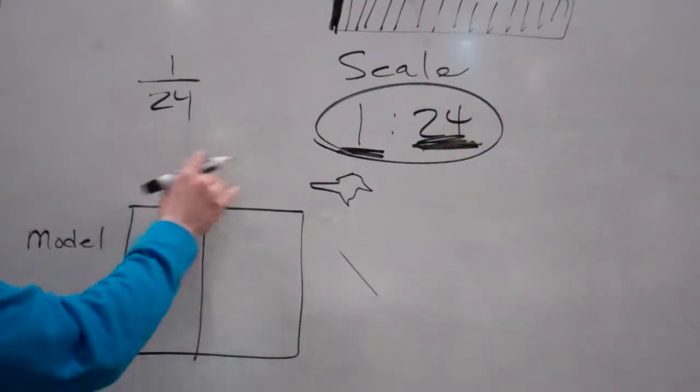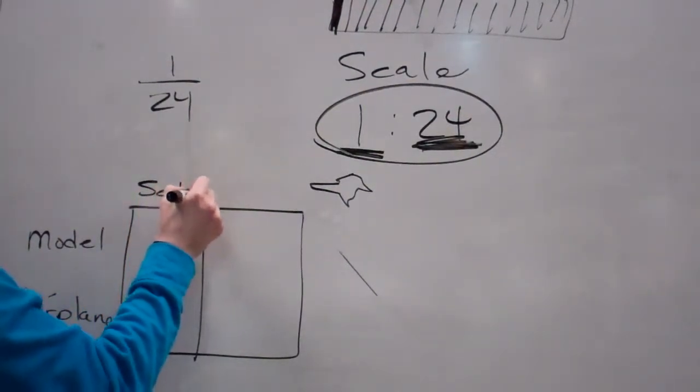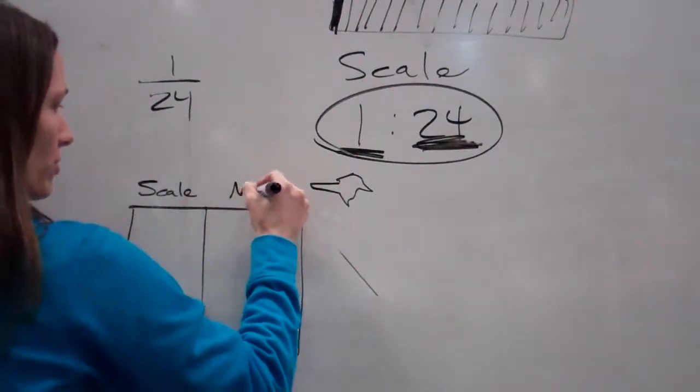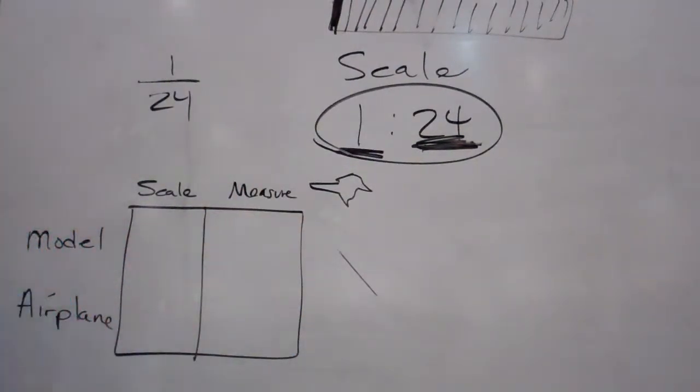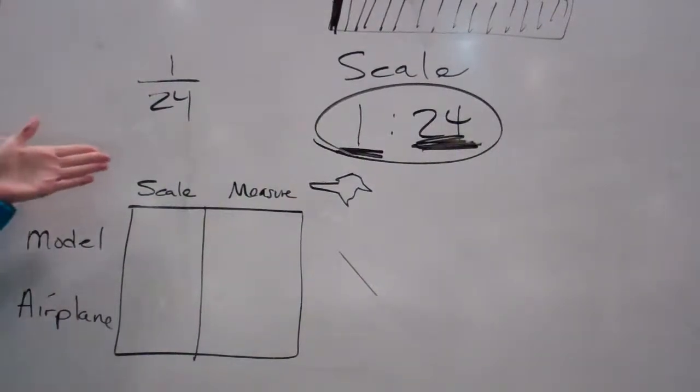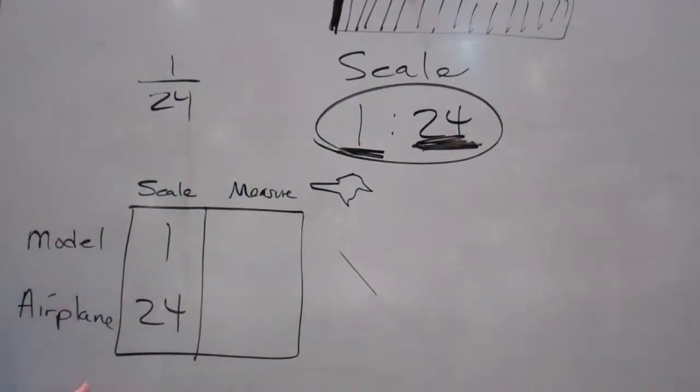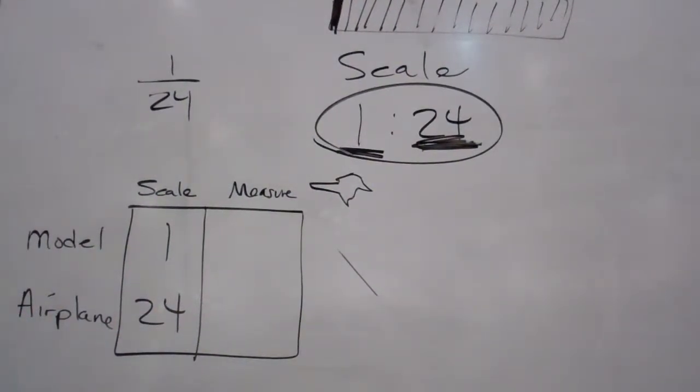And then, what are we trying to figure out? Well, instead of doing percent and actual count, it's scale and then the actual measure. So, I'm just going to put measure. What is my scale for the model and the airplane? 1 over 24.